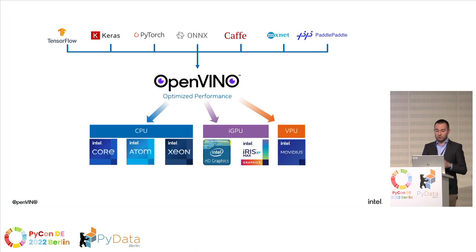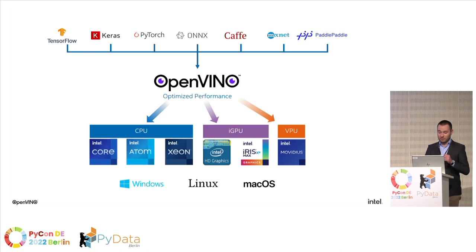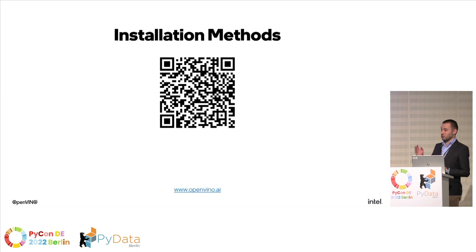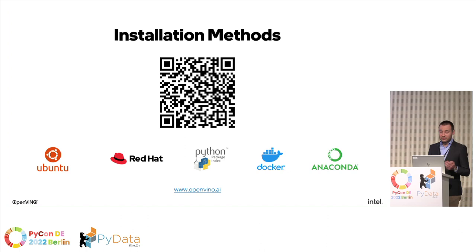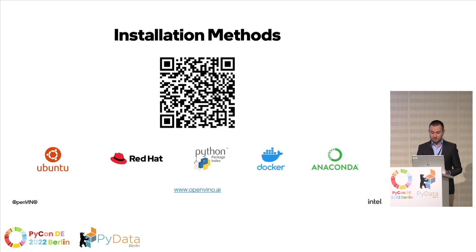To use OpenVINO you need just three simple steps. But first — it works on any operating system: Windows, Linux, and Mac. Step one: install OpenVINO. Scan the QR code to use the selector tool, configure your environment, and download the installer. There are many other ways to install: APT for Ubuntu, YUM for Fedora/Red Hat/CentOS, or via pip — the easiest way. Just run 'pip install openvino' or 'pip install openvino-dev' for the development package. Docker and Anaconda are also supported.